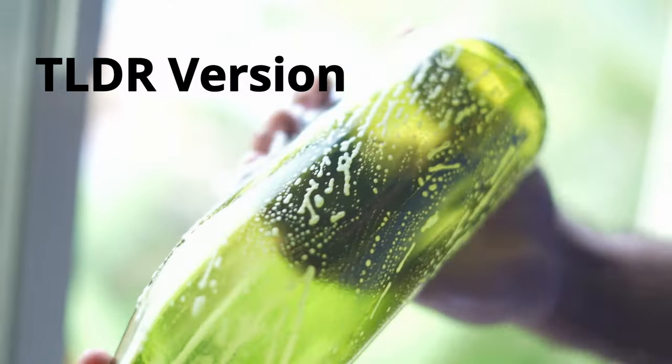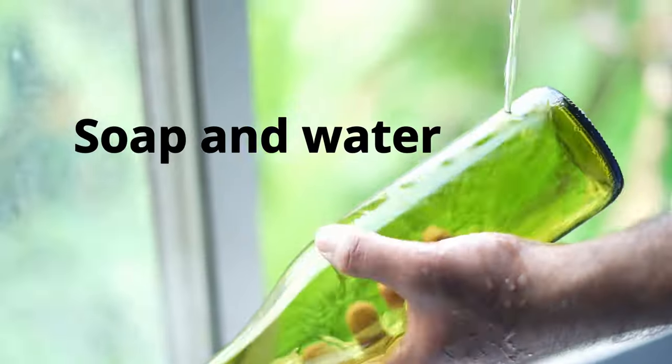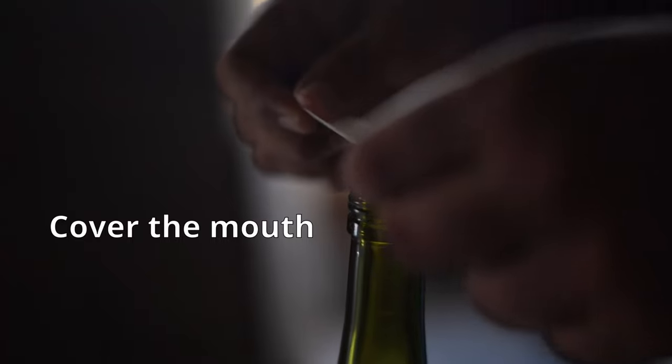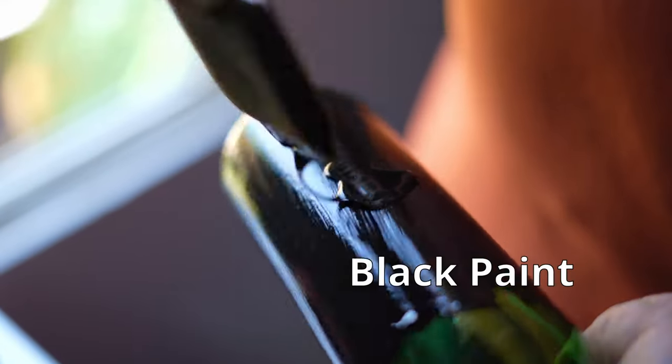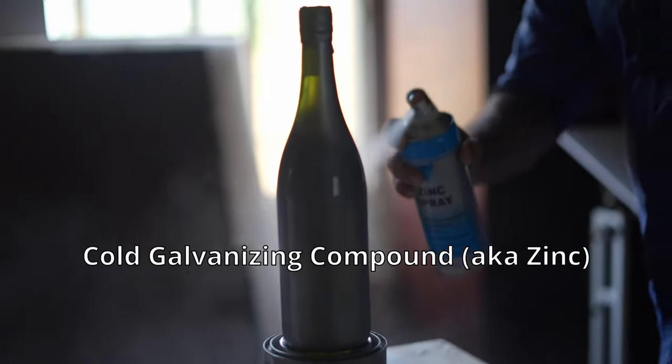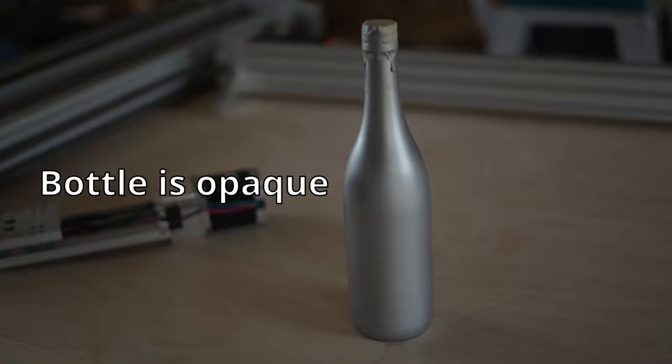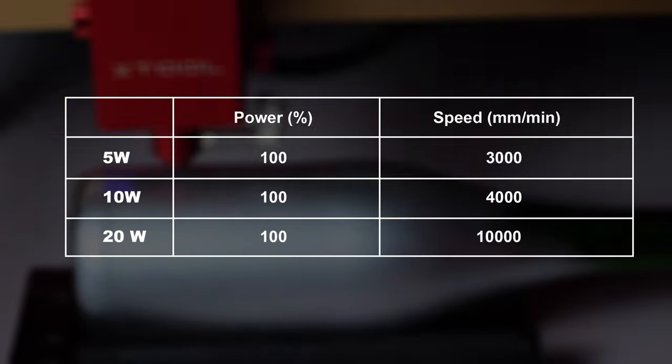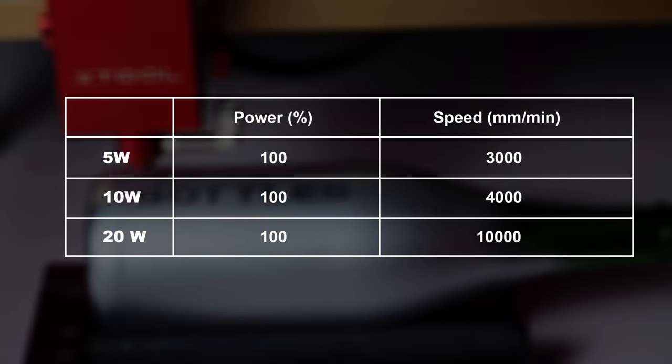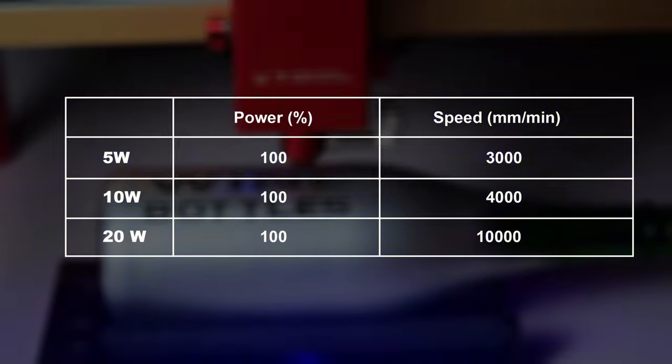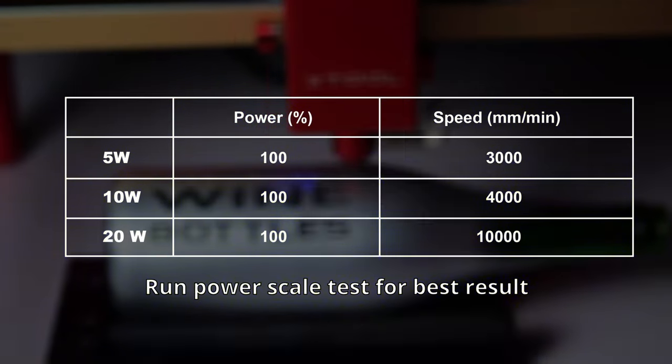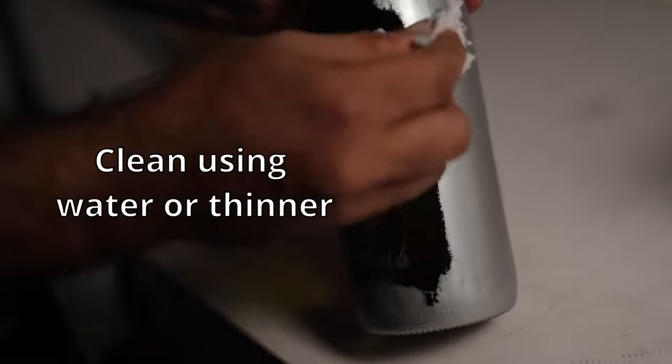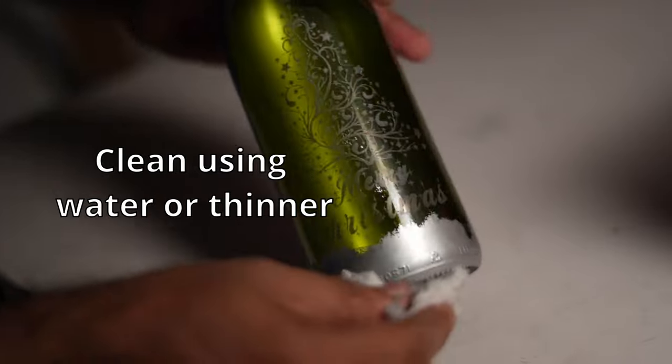So here is the TLDR version. You get a bottle, clean it thoroughly with some soap and water, wipe it and rub it clean with some alcohol for good measure. Cover the mouth to prevent the paint from going in. Coat it with black paint or cold galvanizing compound, aka zinc. Make sure the bottle is opaque. Set up your rotary and these are the power and speed that I use for my 20W, 10W and 5W lasers. You can take a screenshot or pause the screen. These numbers can change based on what laser you have. You should run a power scale test to get the best result on your laser. Once you are done, clean the glass using water or thinner depending on what paint you used and you are good to go.